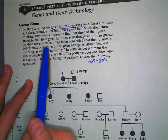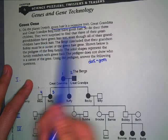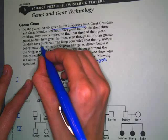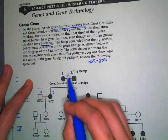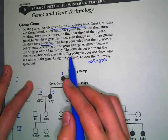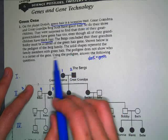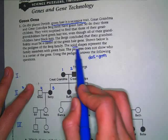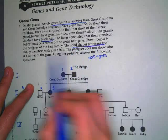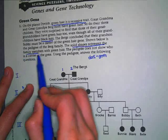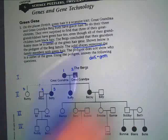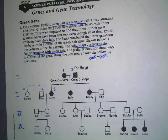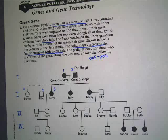If you keep reading, you notice that all the other children have black hair, so that must be the dominant trait. Reading further down, all the dark shapes represent family members with green hair, which we already talked about. The pedigree also doesn't show who's a carrier, so that's what we're trying to figure out.